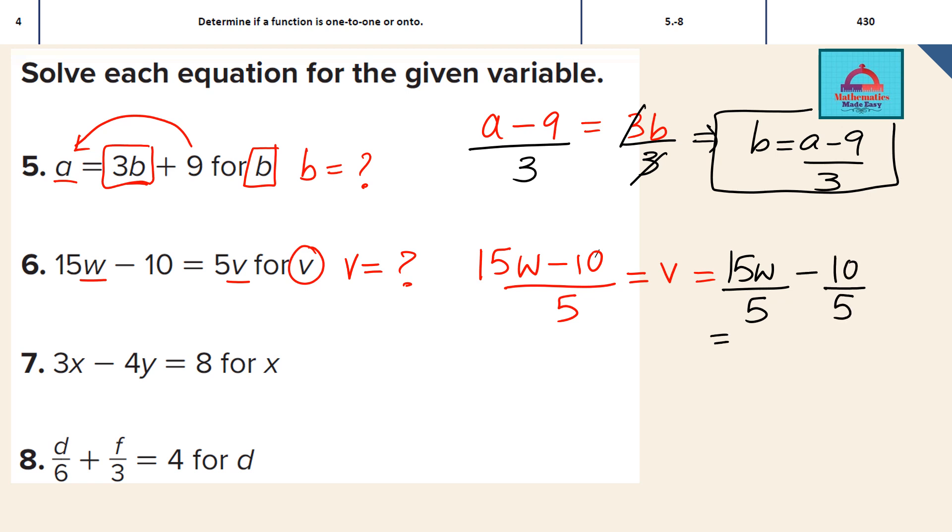So I can write this in this manner 15W divided by 5 minus 10 divided by 5. So the final answer comes out to be 15 divided by 5, that is 3W minus 10 divided by 5, that is 2. So V is going to be 3W minus 2. That's the answer for this question.